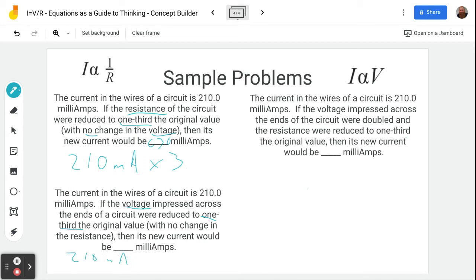So we start out with 210 milliamps, and we see that the voltage is the thing changing. We look up, we see voltage is directly proportional to current. When the voltage gets bigger, the current is bigger, but in this case, the voltage got smaller, so the current will get smaller. So since the voltage was divided by three, we must also divide the current by three, which is going to give us 210 divided by three gives us 70.